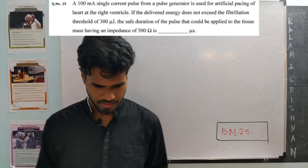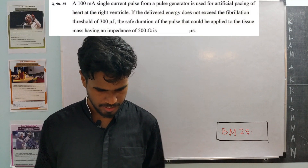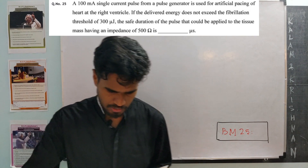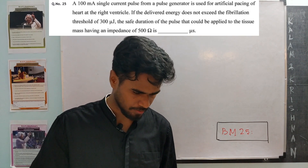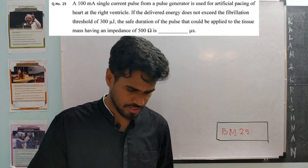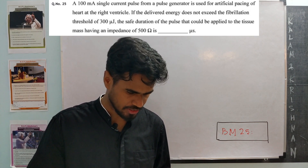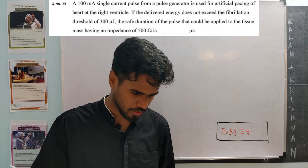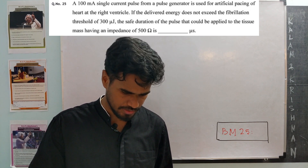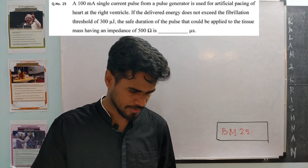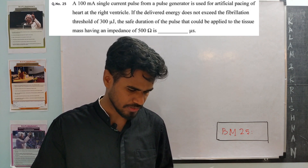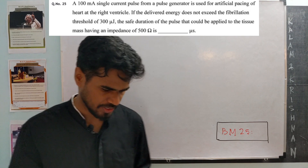Question 25: A 100 milliamp single current pulse from a pulse generator is used for artificial pacing of the heart at the right ventricle. If the delivered energy does not exceed the fibrillation threshold of 300 microjoules, the safe duration of the pulse applied to a tissue mass having an impedance of 500 ohms is how many microseconds?